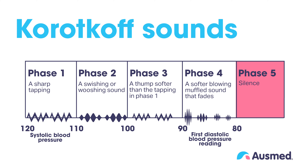Phase 5: Silence that occurs when the cuff pressure is released enough to allow normal blood flow. This is known as the second diastolic reading.